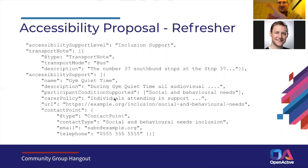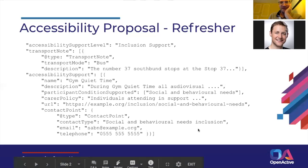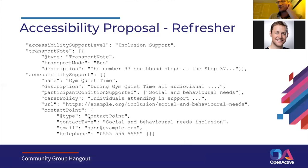Each object is intended to describe some particular accessibility feature in a fairly high degree of detail. So the idea is that if you had four or five accessibility features, you'd have four or five of those objects in that array. The open questions with regard to this — the first one is about information repetition. If you look at the example, there's a slot in accessibility support for a contact point, and sport England research flagged that people with accessibility needs really want to talk to or at least email somebody and get reassurance that their needs will be met.